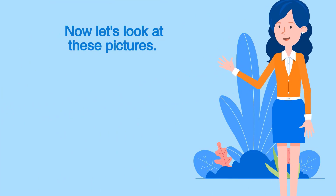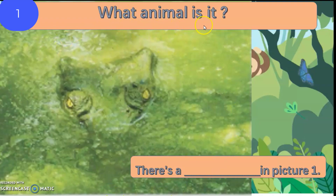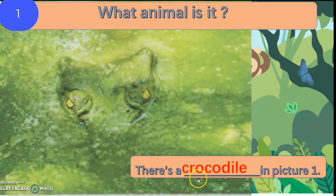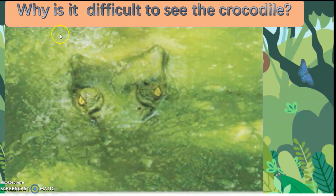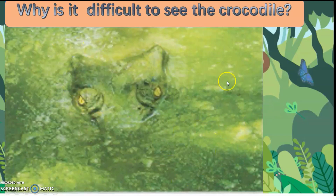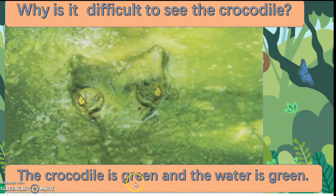Now, let's look at these pictures. What animal is it? Can you see it? Can you guess? These are the eyes. There is a crocodile in picture one. Why is it difficult to see the crocodile? What colour is the crocodile? It is green and it's in the water. The crocodile is green and the water is green too. So, we cannot see the crocodile. It's difficult to see the crocodile.